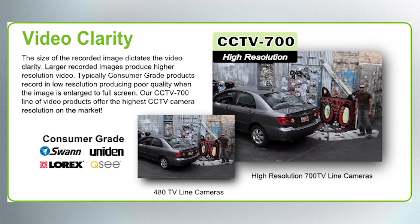The quality of the video signal is a function of the lines of resolution that the camera provides and the format the DVR is set to record. The highest resolution available for CCTV cameras is 700 TV lines.